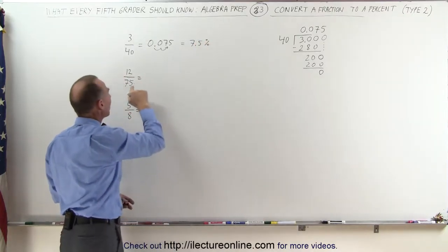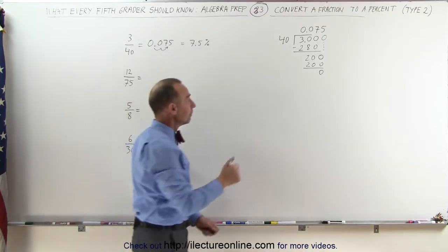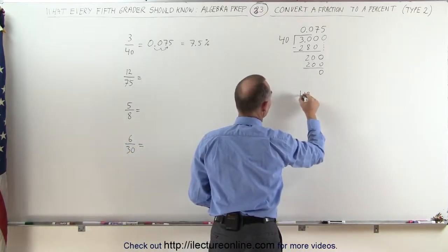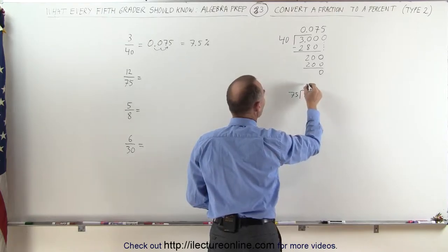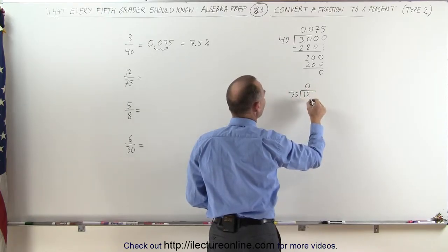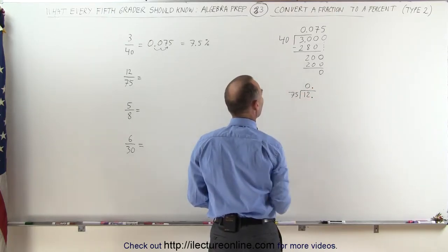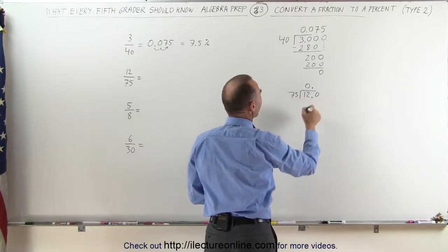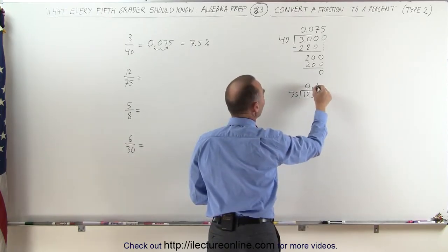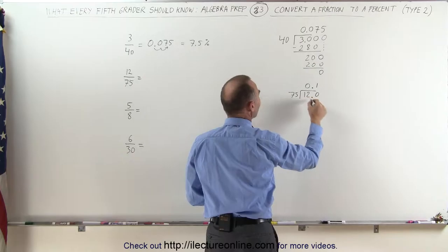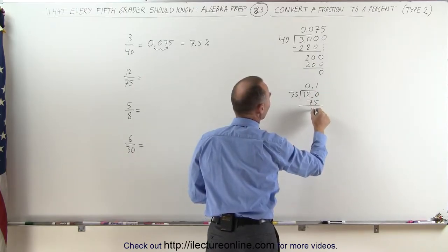Okay, let's try the same with 12 divided by 75. 75 does not go into 12, so we put a 0 there. Now we must put a decimal place there and a decimal place there. We add a 0. 75 goes into 120 one time. 1 times 75 is 75. The remainder is 45.